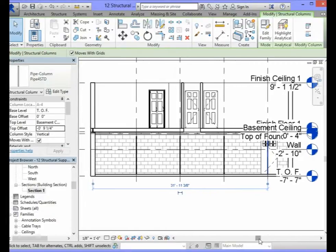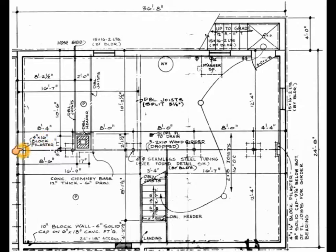Now all of your columns are set to the appropriate heights. The next structural component that you will need to install will be the 4x16 block pilaster. You will see a block pilaster on this side of the foundation as well as this side, so we will have two 4x16 block pilasters.